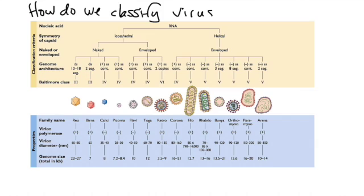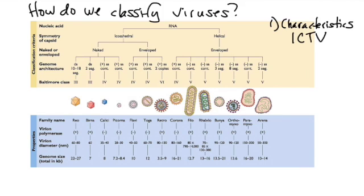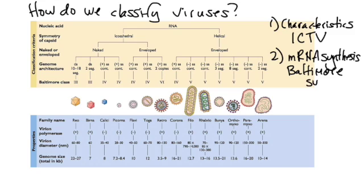There's two different ways that viruses get classified. One is based on their properties or their characteristics. This is the ICTV method, which stands for the International Committee on Taxonomy of Viruses. The second is based on mRNA synthesis, or how does that particular viral genome make a messenger RNA. This was developed by a man named David Baltimore, so it's called the Baltimore system.